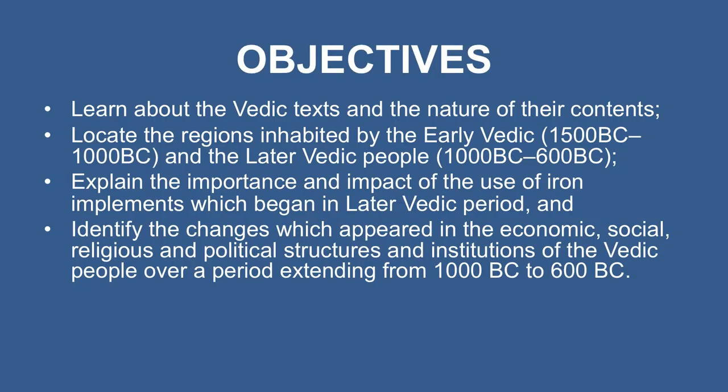The objectives of this program are: to learn about the Vedic texts and the nature of their contents; locate the regions inhabited by the early Vedic and the later Vedic people; explain the importance and impact of the use of iron implements which began in the later Vedic period; and identify the changes which appeared in the economic, social, religious and political structures and institutions of the Vedic people over a period extending from 1000 BC to 600 BC.